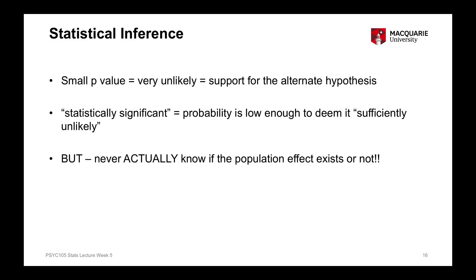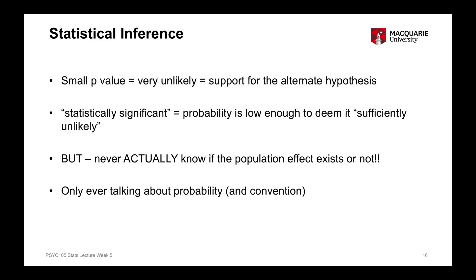It's important to keep in mind that even if we conclude that we have a statistically significant result, we never actually know if there is an effect in the population. We never have information from the entire population — all we have is from the sample representative of the population. All we're talking about is the probability of it being true, following certain conventions about when we have support for our alternate hypothesis.